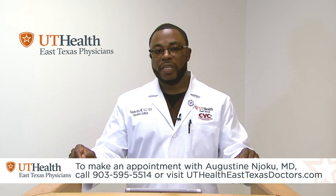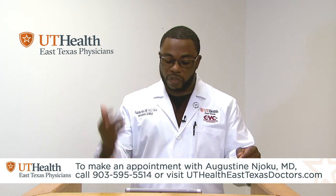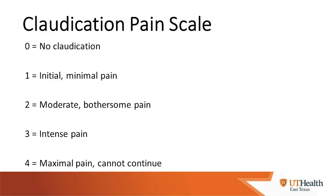This is the claudication pain scale, which we use when prescribing an exercise program. The goal is to get the patient's pain level to at least a three before resting and progressing to the next level. On the scale, zero is no claudication and four is severe muscle pain where you cannot continue. There is also a distinction between acute limb ischemia — a very sudden occlusion with sudden pain, no pulse, discoloration, paresthesia, and sometimes paralysis — and critical limb ischemia.